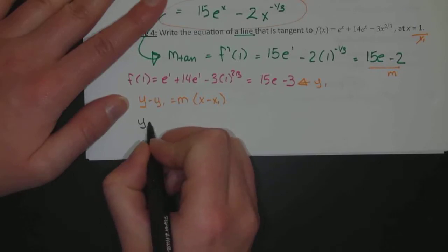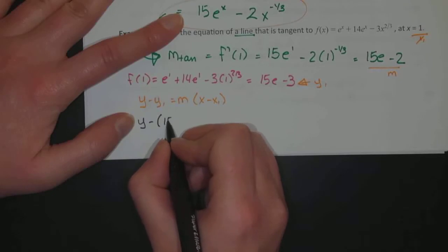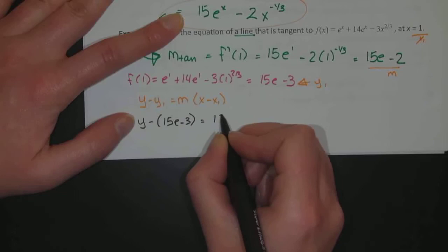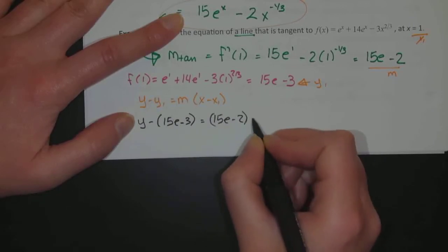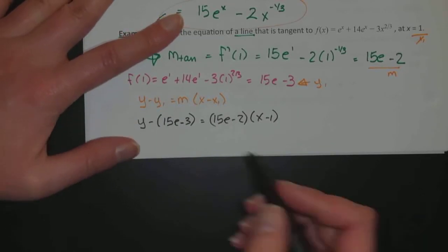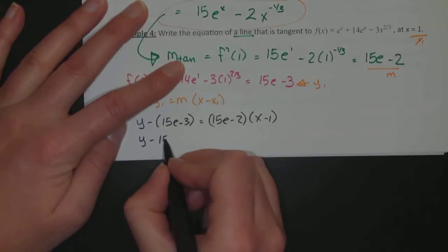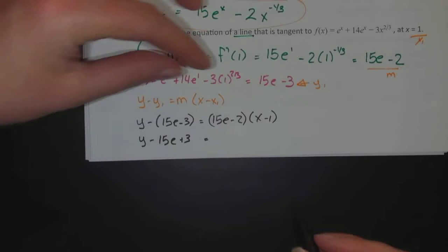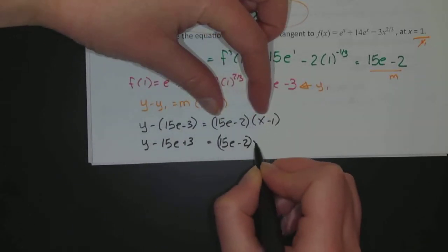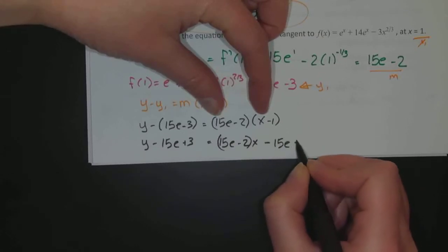It's going to be y minus quantity, so parenthesis, y1, which is 15e minus 3, equals m, which is 15e minus 2 quantity times x minus 1 quantity. If I distribute, it's y minus 15e plus 3 equals 15e minus 2 quantity x minus 15e plus 2. I'm distributing the negative 1 on these two so that I'll be able to add these over.